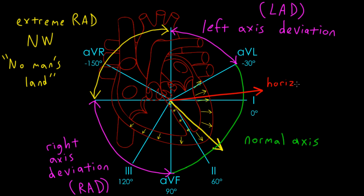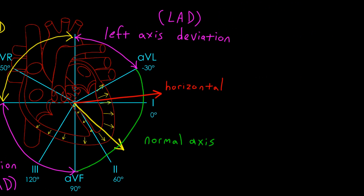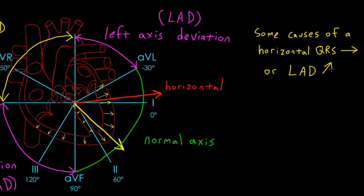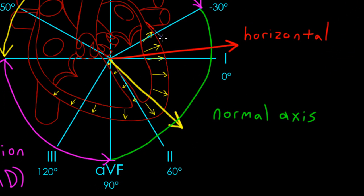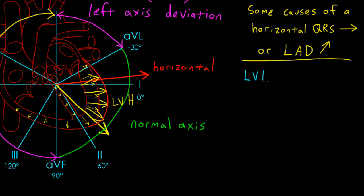I might use the word 'horizontal' to describe it, just to extract a little more information. While a horizontal QRS axis is in the normal range, it's helpful to think of possible abnormalities that could produce it. Left ventricular hypertrophy would produce more forces in this direction, giving you a more horizontal QRS axis. Note that LVH alone shouldn't cause left axis deviation, but you can get a more horizontal axis. You can also add forces in the vicinity of the left ventricle to produce a more horizontal QRS axis.